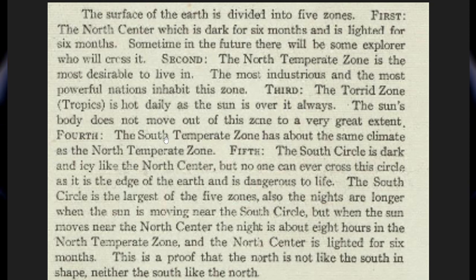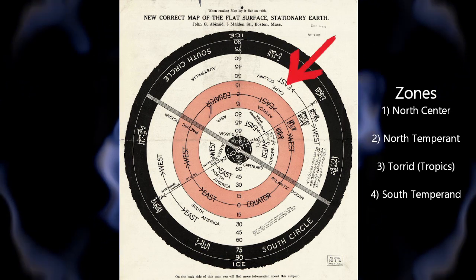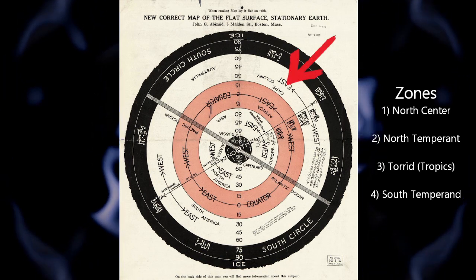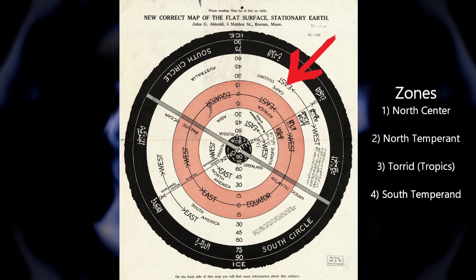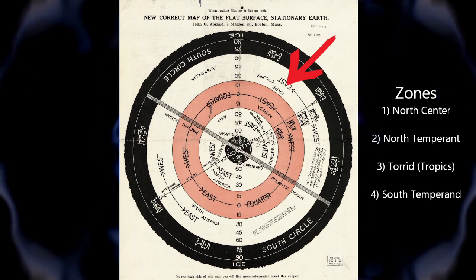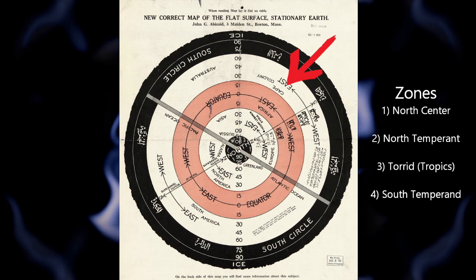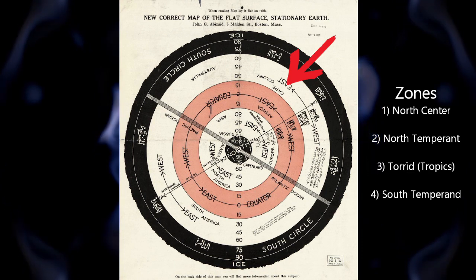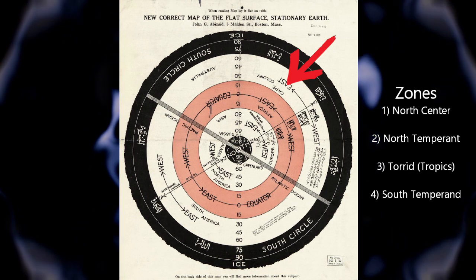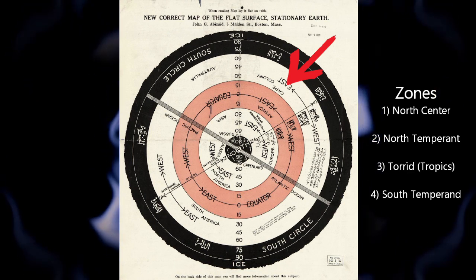The fourth zone is the south temperate zone, which has about the same climate as the north temperate zone. On the map, this is the outer white ring. What he's saying is that the temperature in this outer white zone is going to be very similar to the inner white zone, because of the way the sun migrates between the tropics — giving close to similar temperatures, which is what you should expect on a flat stationary earth.